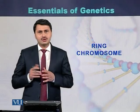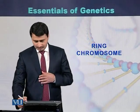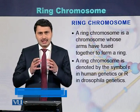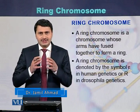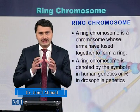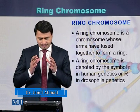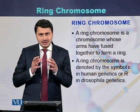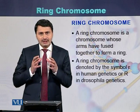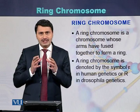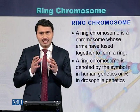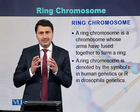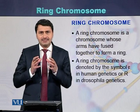A ring chromosome is a chromosome whose ends are fused with each other to form a ring. Ring chromosomes are usually denoted in humans by a small 'r', but in the case of Drosophila, they are represented by a capital 'R'.